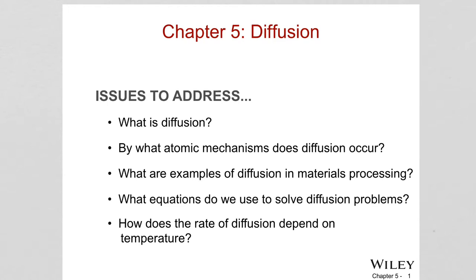For example, oxidation and phase transformations — going from one phase to another — all these types of processes taking place in a material system include atomic motion. This is what we call diffusion: the net flow of atoms due to a concentration gradient.